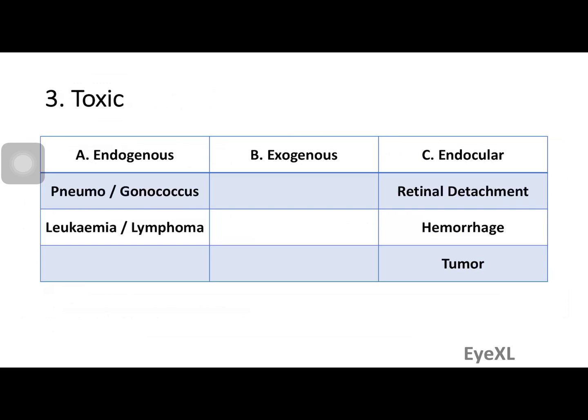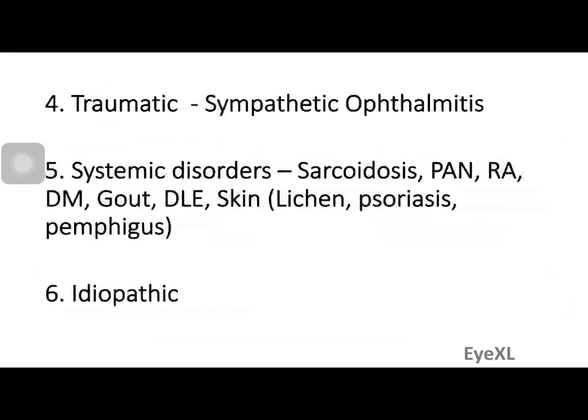Intraocular sources of toxic uveitis include retinal detachment with pigment dispersion, vitreous hemorrhage or hyphema, and intraocular tumors — most commonly malignant melanoma. The fourth type is traumatic uveitis, specifically sympathetic ophthalmitis, where trauma to one eye produces uveitis in the other. Certain systemic disorders are also associated with uveitis: sarcoidosis, polyarteritis nodosa, rheumatoid arthritis, and diabetes mellitus all show increased incidence.